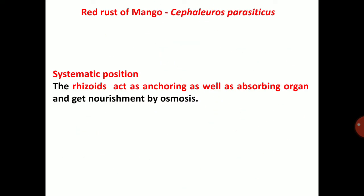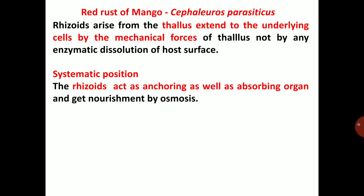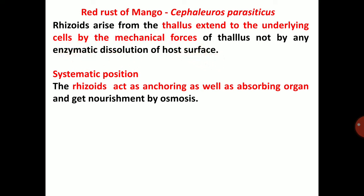In red rust of mango, the rhizoids arise from the thallus and extend to the underlying cells by mechanical forces of the thallus, not by any enzymatic dissolution of the host surface. There is no enzymatic dissolution. The organism mainly enters through mechanical force by rhizoids and enters into the host to suck nutrients.